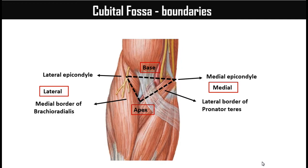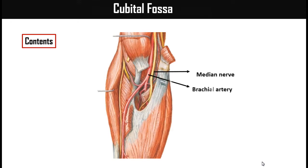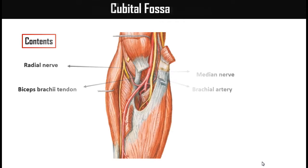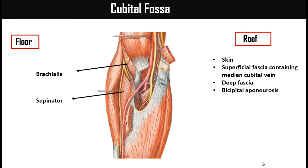The contents from medial to lateral are: the median nerve, then the brachial artery and its branches (radial and ulnar), then the biceps brachii tendon, and lateral to the tendon the radial nerve. The floor of the fossa is formed by the brachialis and supinator muscles. The roof is formed by the superficial fascia containing the medial cubital vein, the deep fascia, and the bicipital aponeurosis.